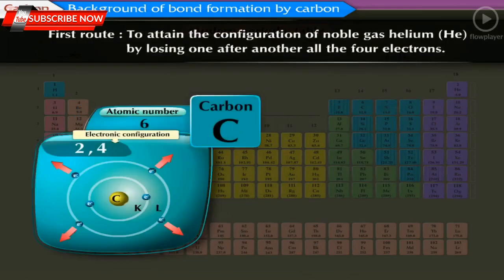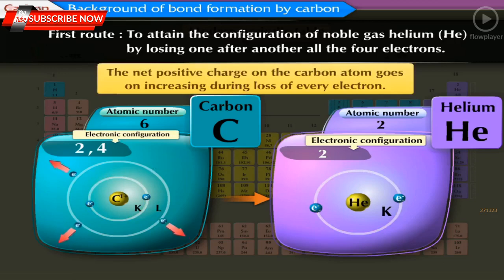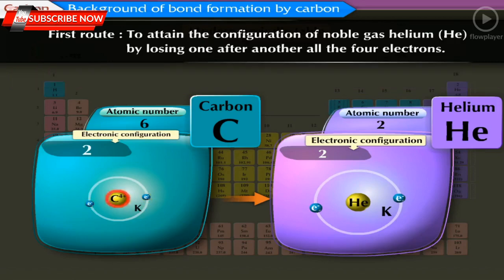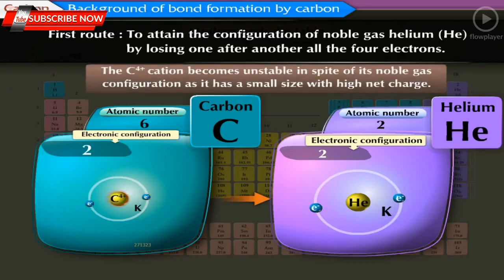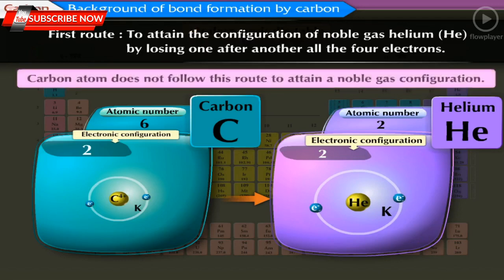First route: To attain the configuration of noble gas helium by losing all 4 electrons one by one. In this method, the net positive charge on the carbon atom increases with every electron lost, requiring more energy to lose the next electron. Also, the C⁴⁺ cation ultimately formed is unstable despite its noble gas configuration, as it has a small size with a high net charge. Therefore, carbon does not follow this route.